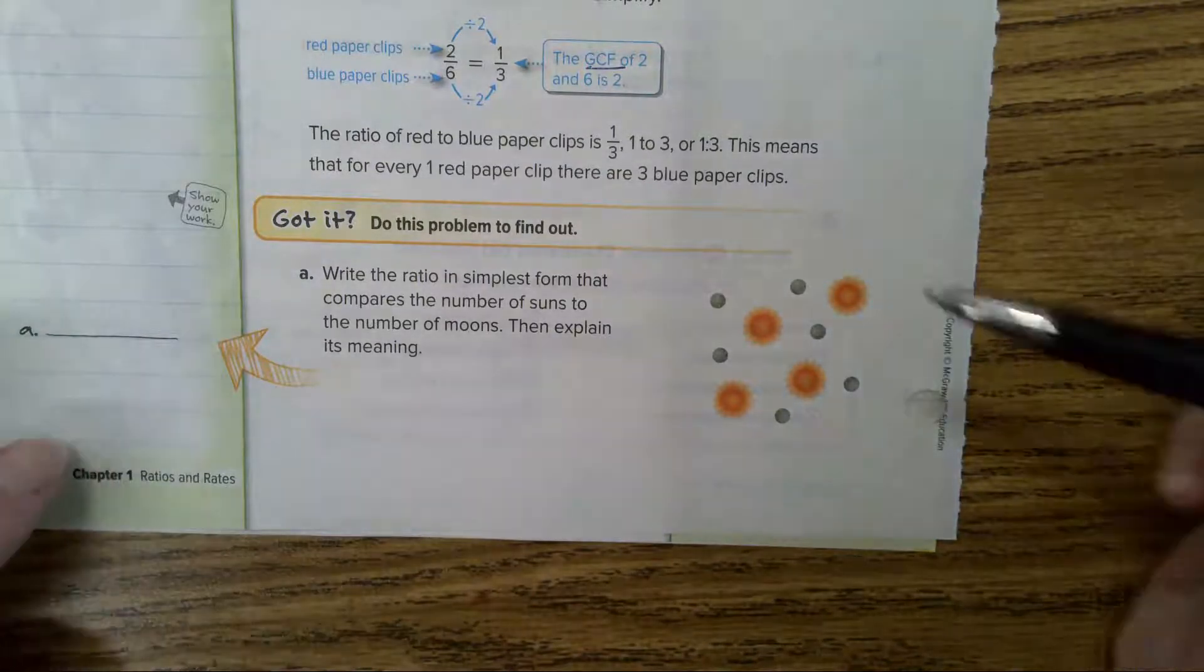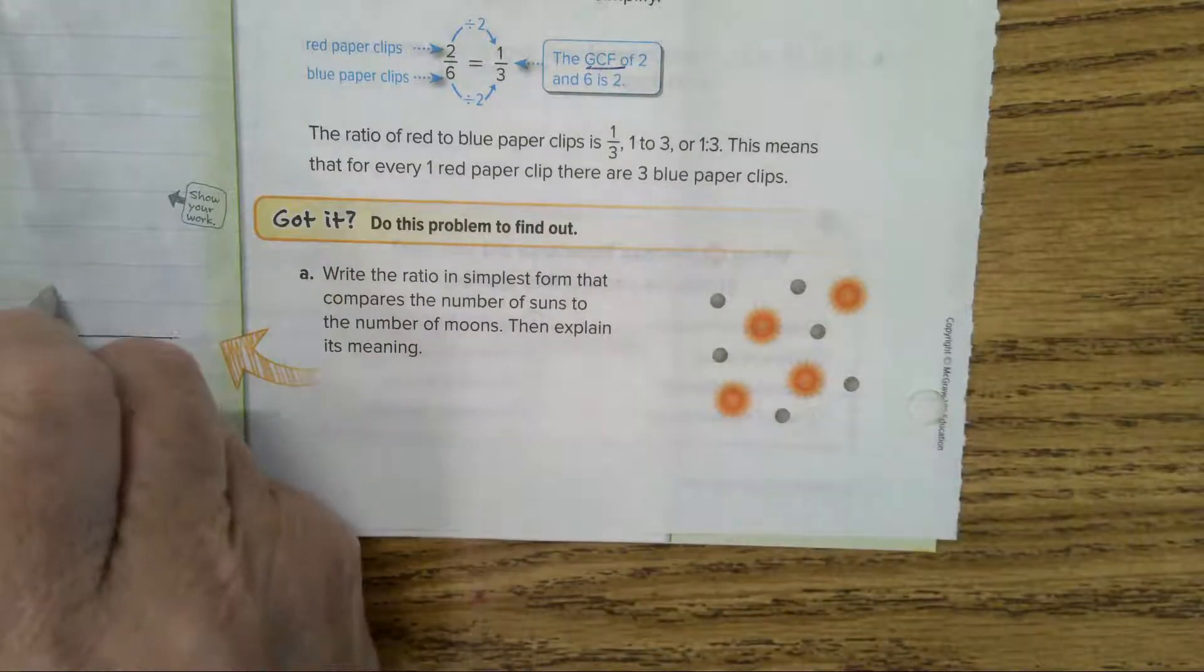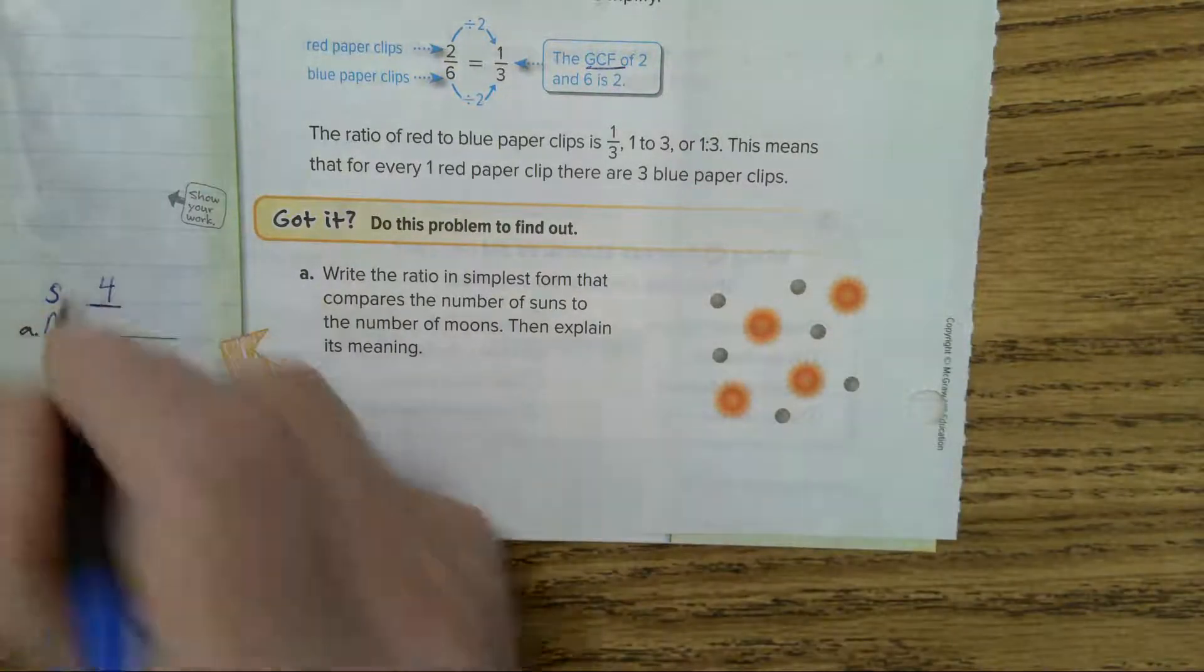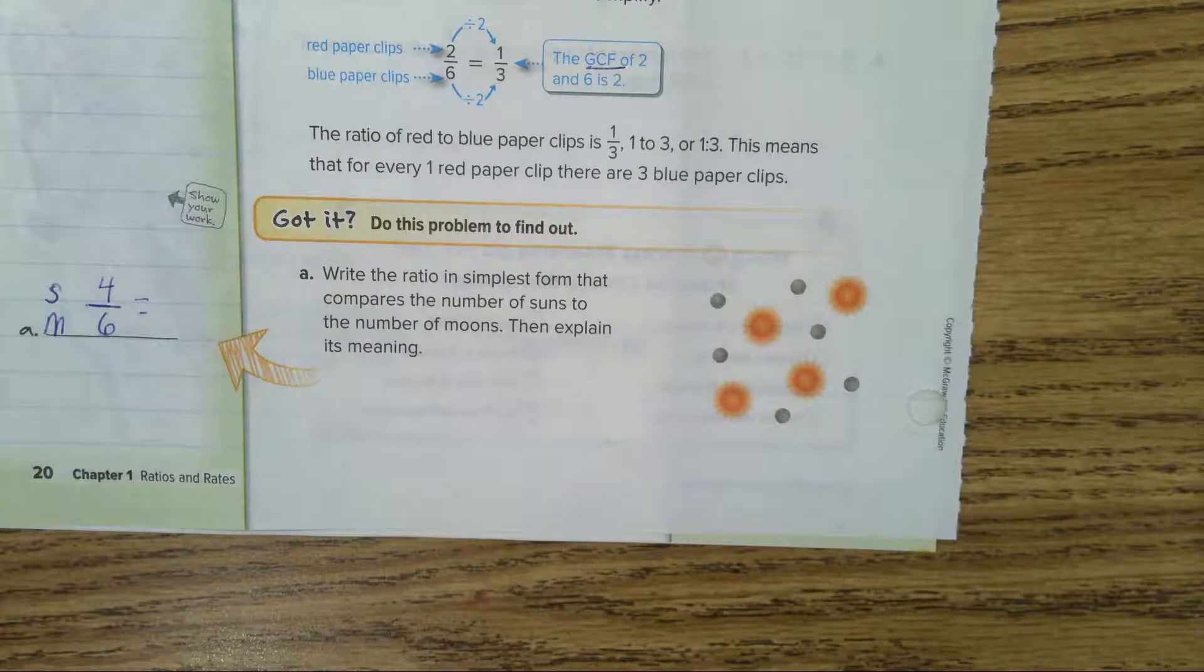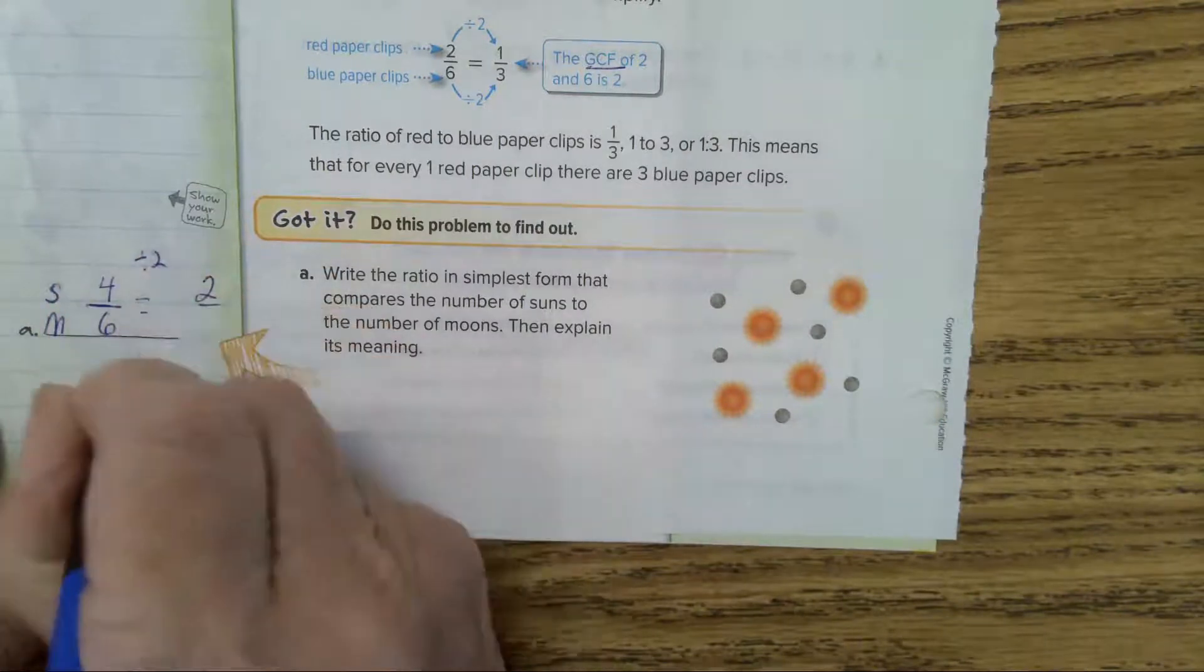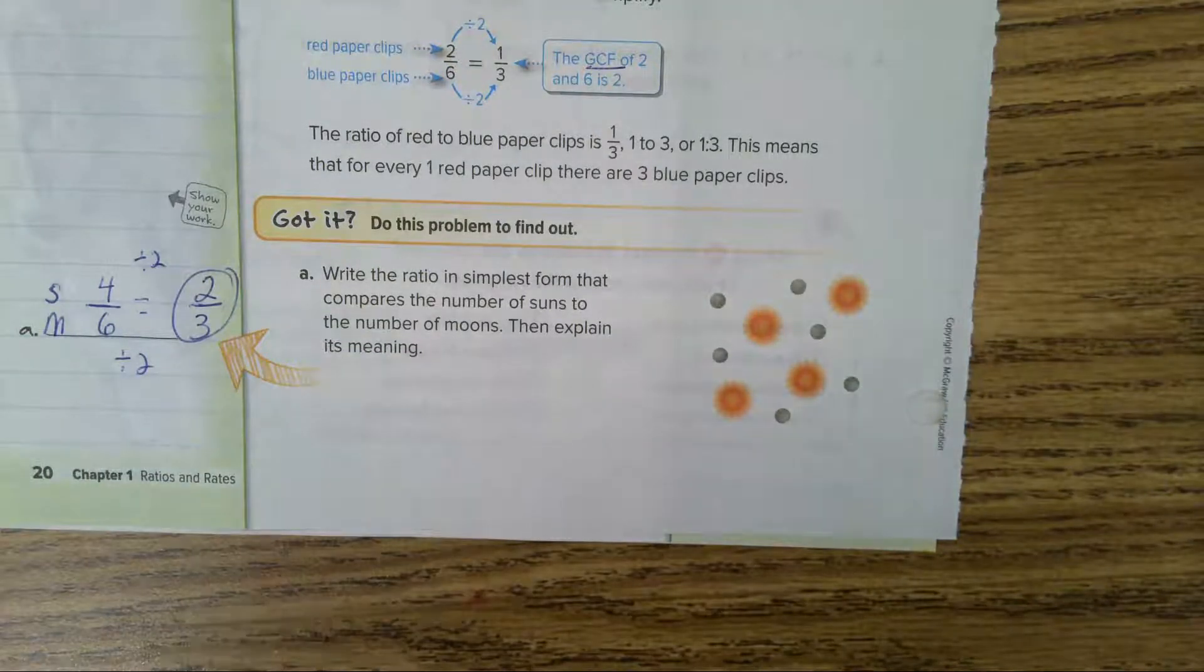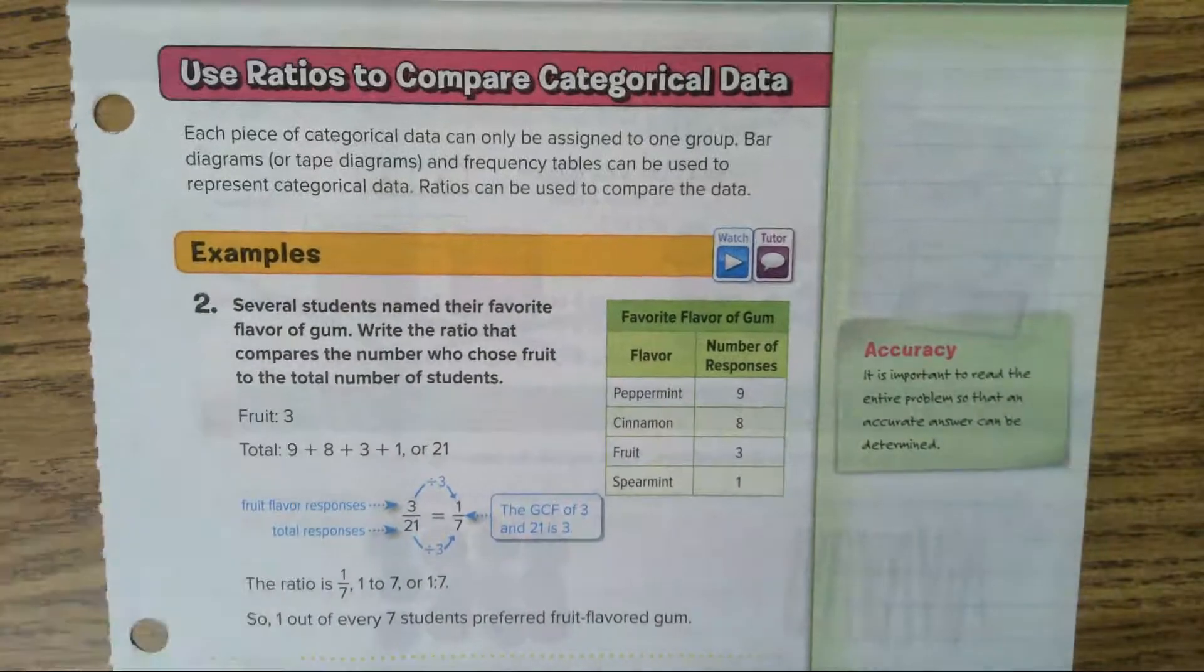Let's do example A. Write the ratio in simplest form that compares the number of suns to the number of moons. Suns will be on top, moons will be on bottom. Four suns, six moons. That will simplify. What will divide four and six? Yes, two. Four divided by two is two, six divided by two is three, so we have two thirds.